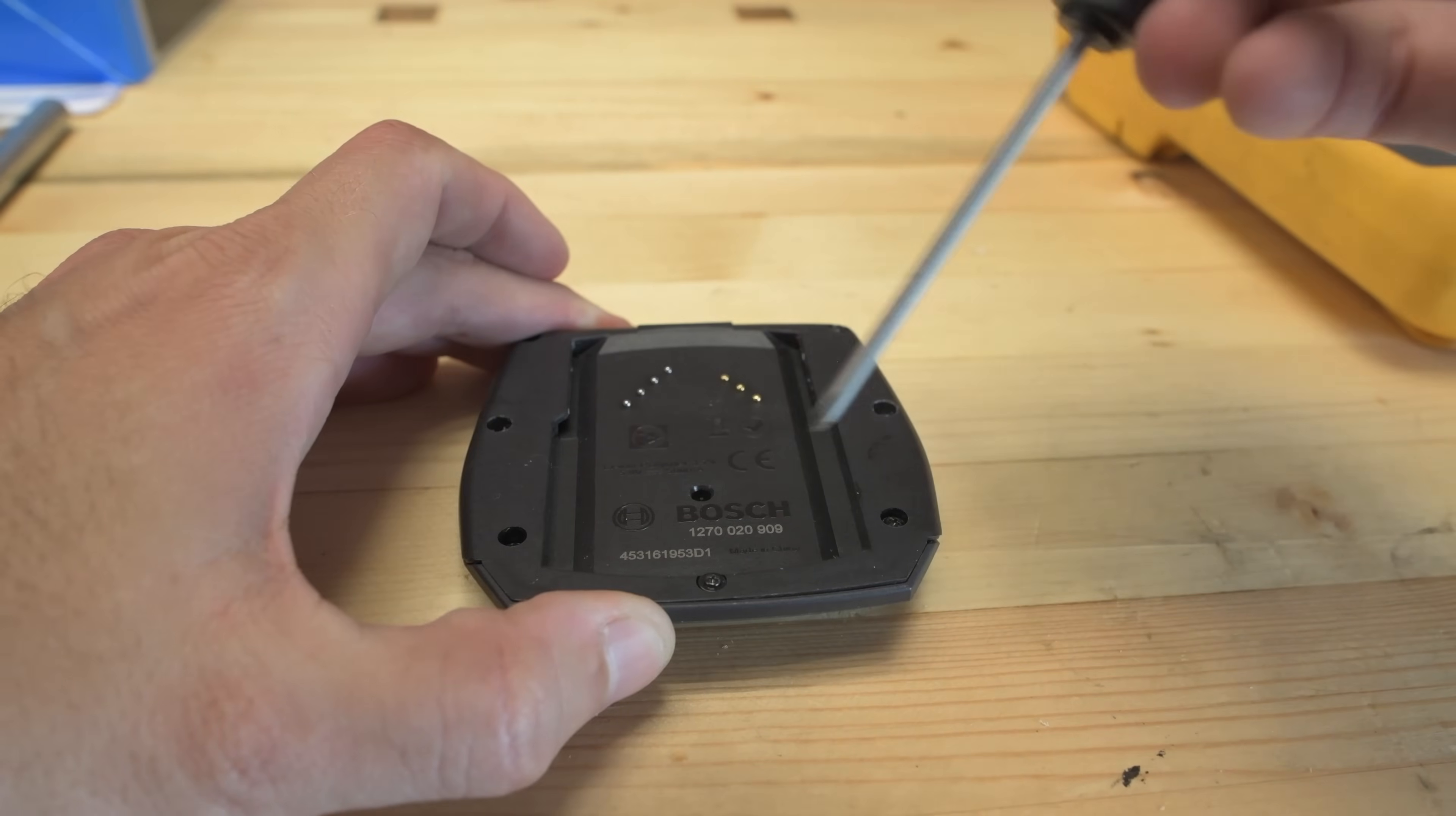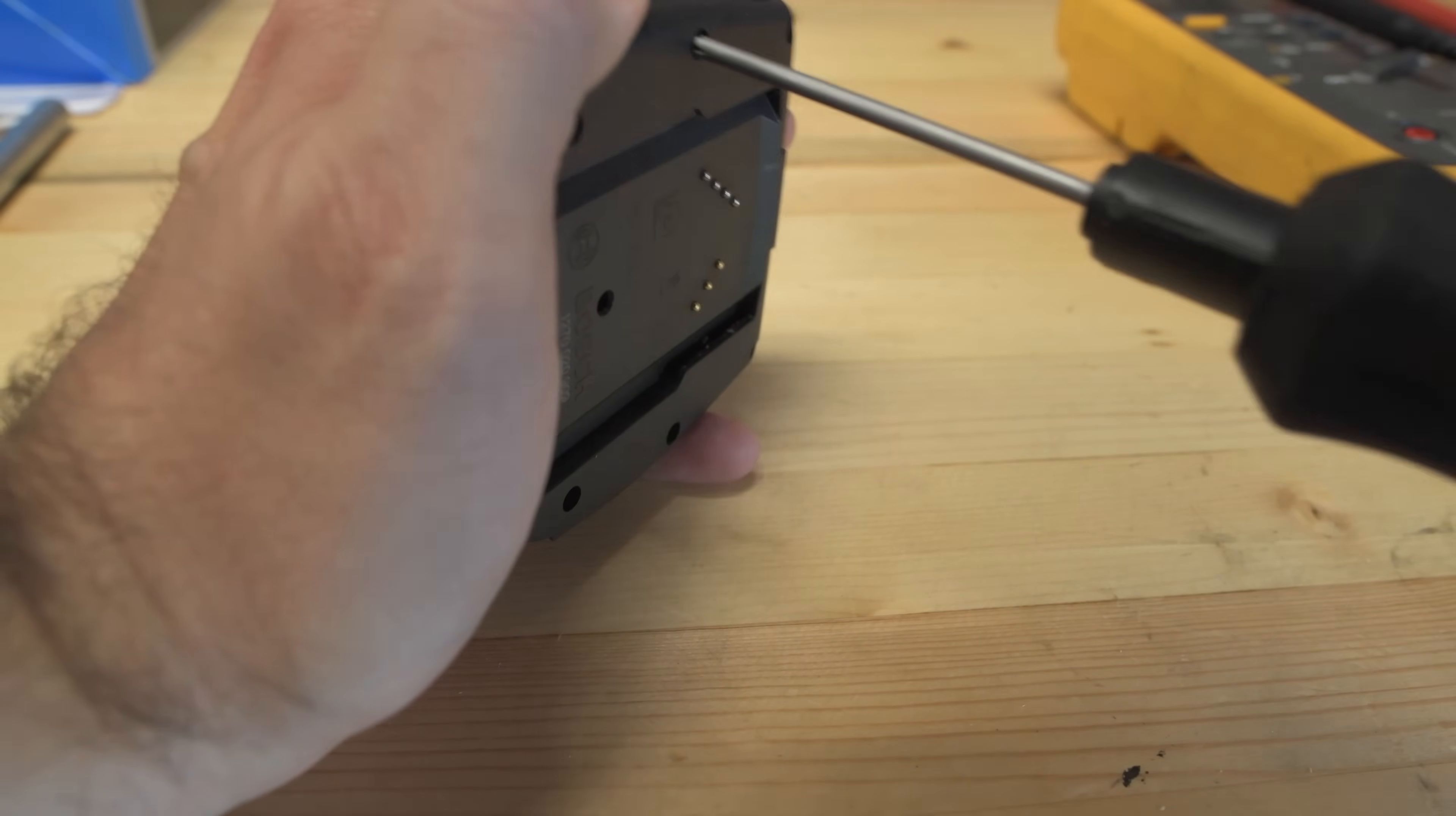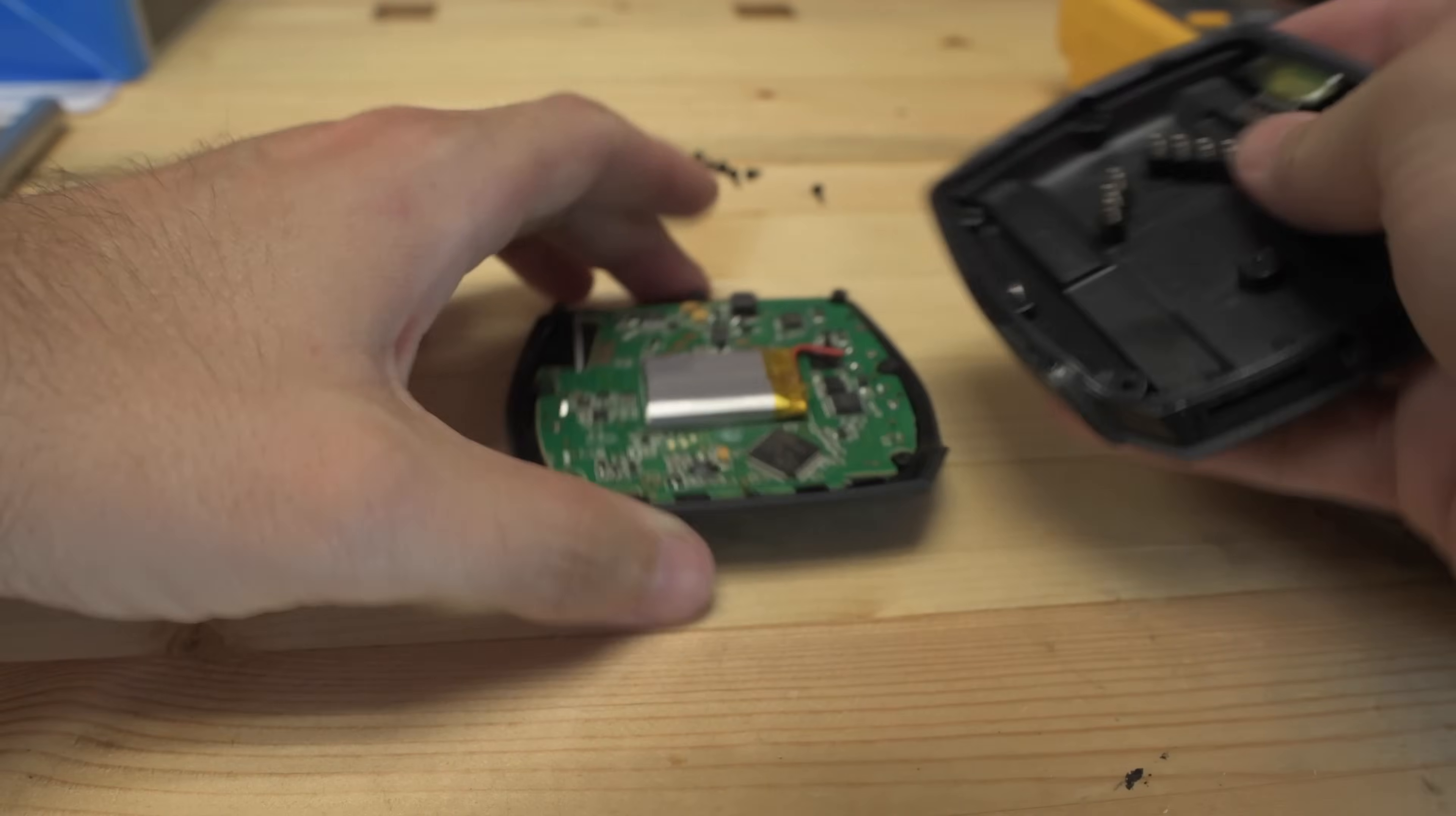All of these screws are the same as far as I can tell, except for this one. This one's short. So remember that when you reassemble. I am applying quite a bit of pressure. Not a huge fan of these screws. You can kind of see as I'm unscrewing this, the casing is separating and I've got one screw here that I missed. There we go.